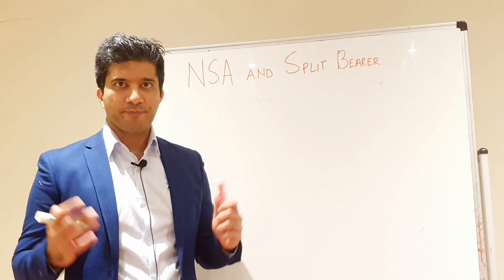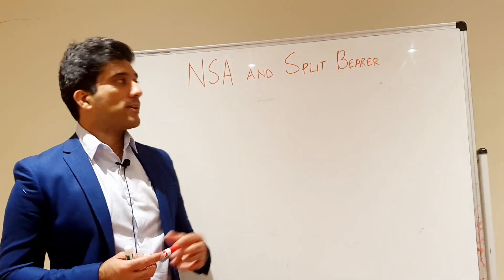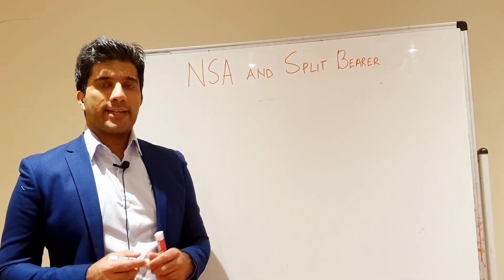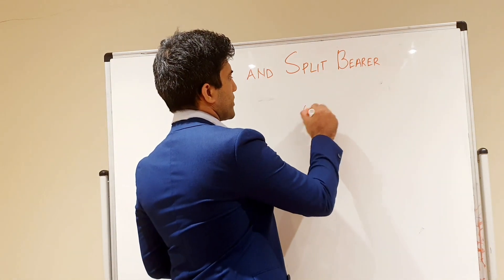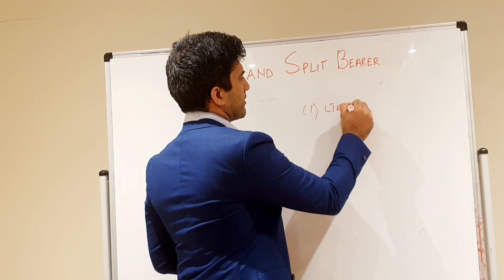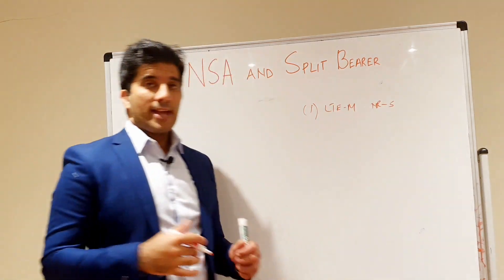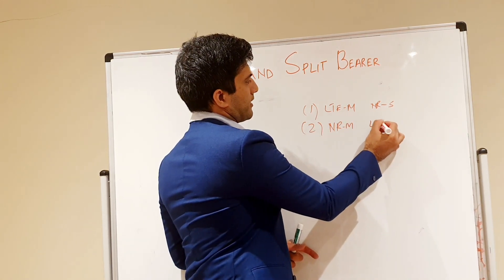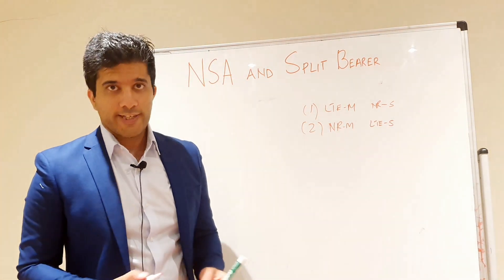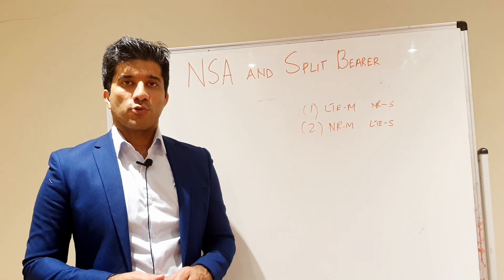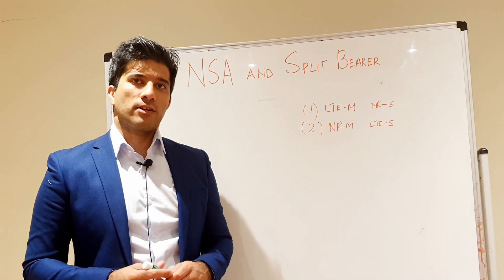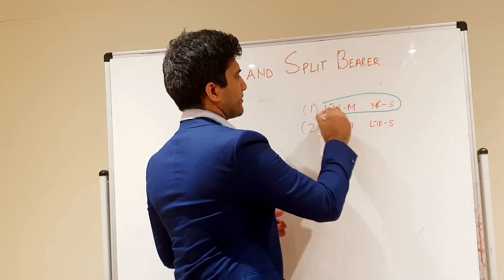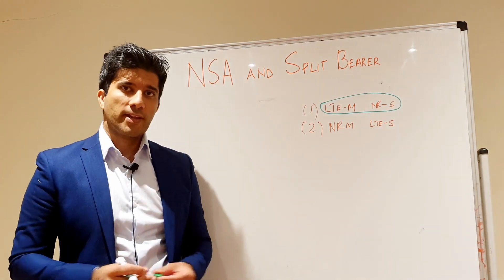First, let's look at how an NSA network works with LTE and NR. In NSA we can have two configurations: the first is LTE as the master and NR as the secondary, and the second is NR as the master and LTE as the secondary. Since LTE networks are mature these days, the most common deployment currently being used is LTE as the master node and NR as the secondary node.